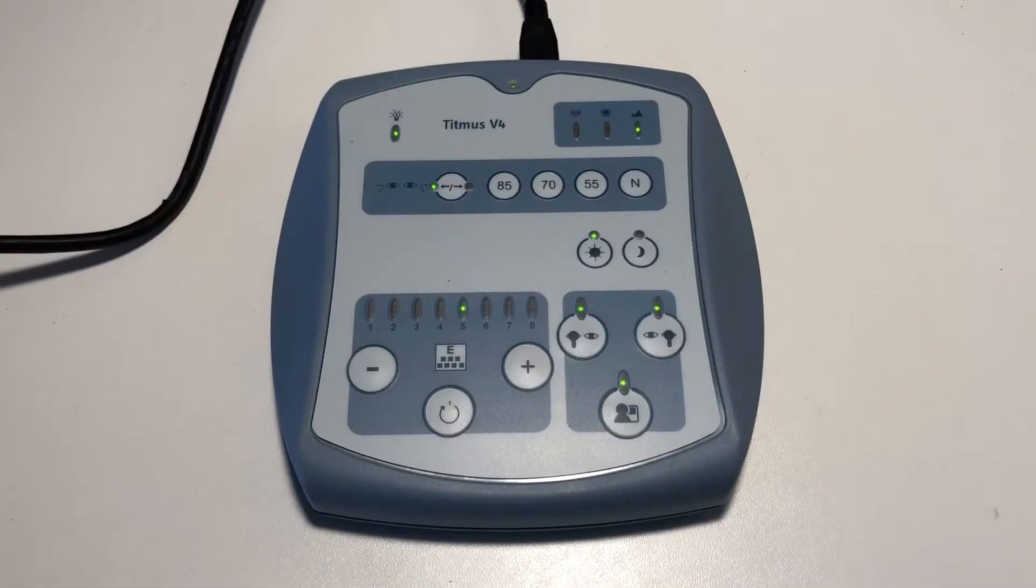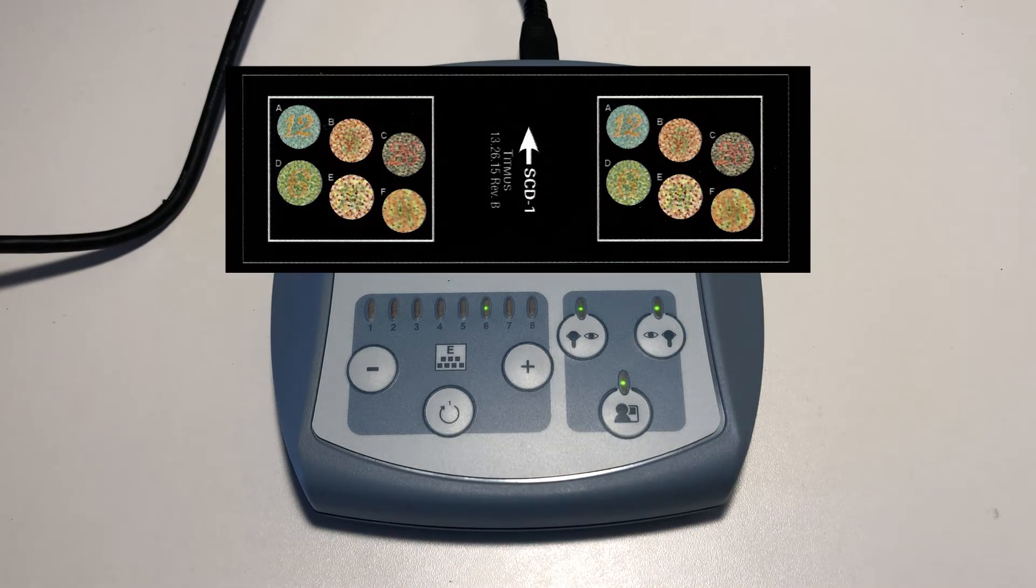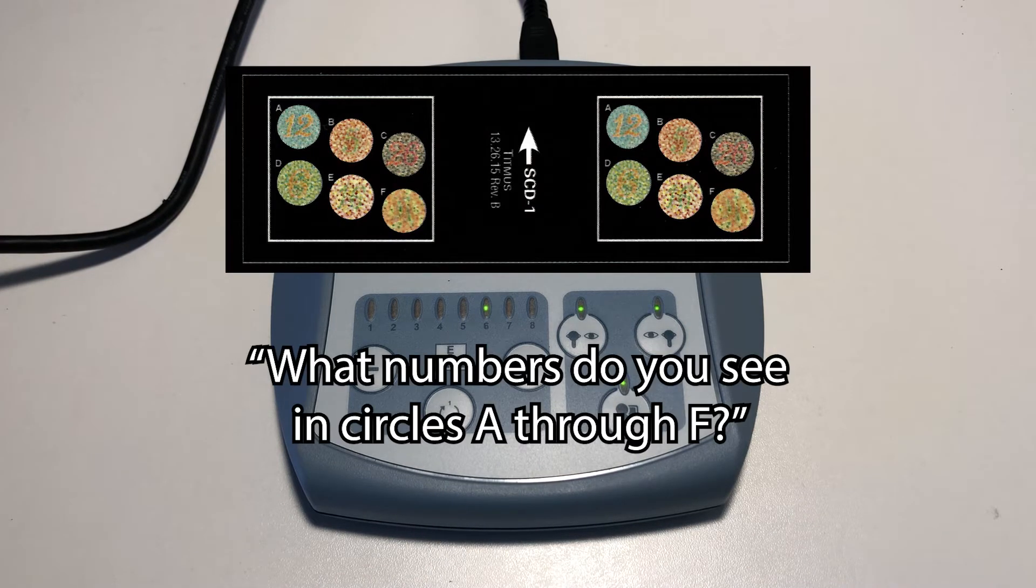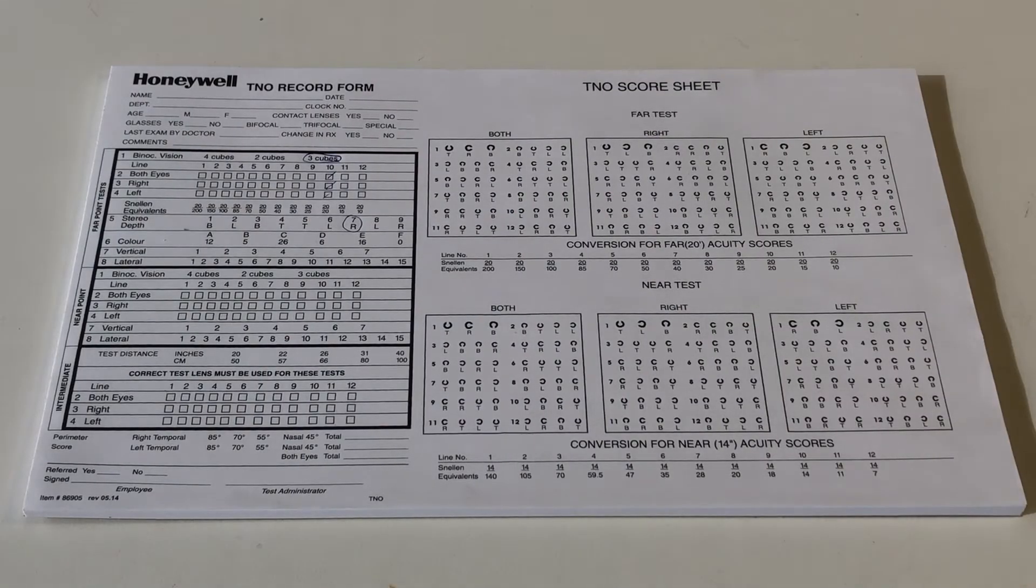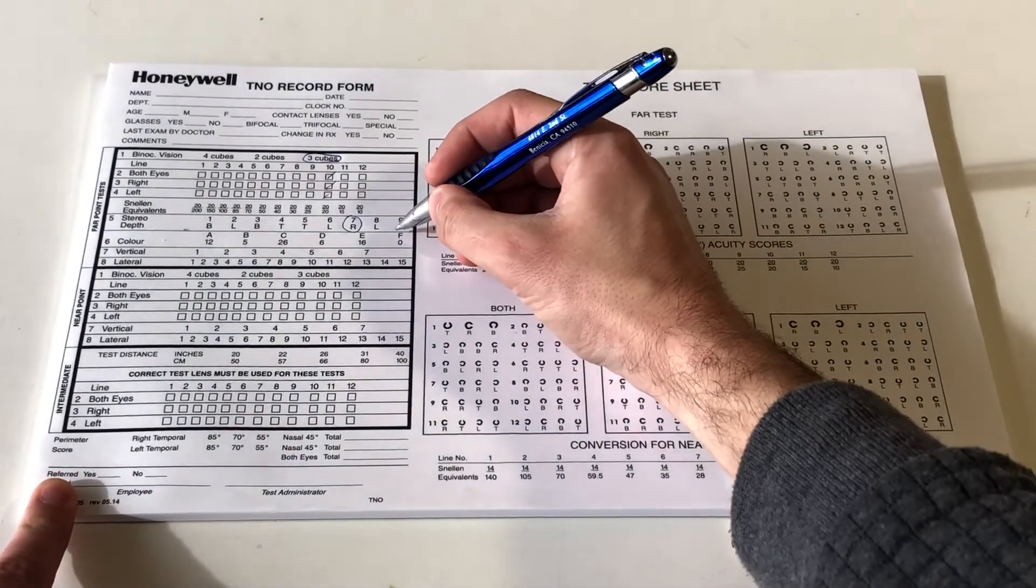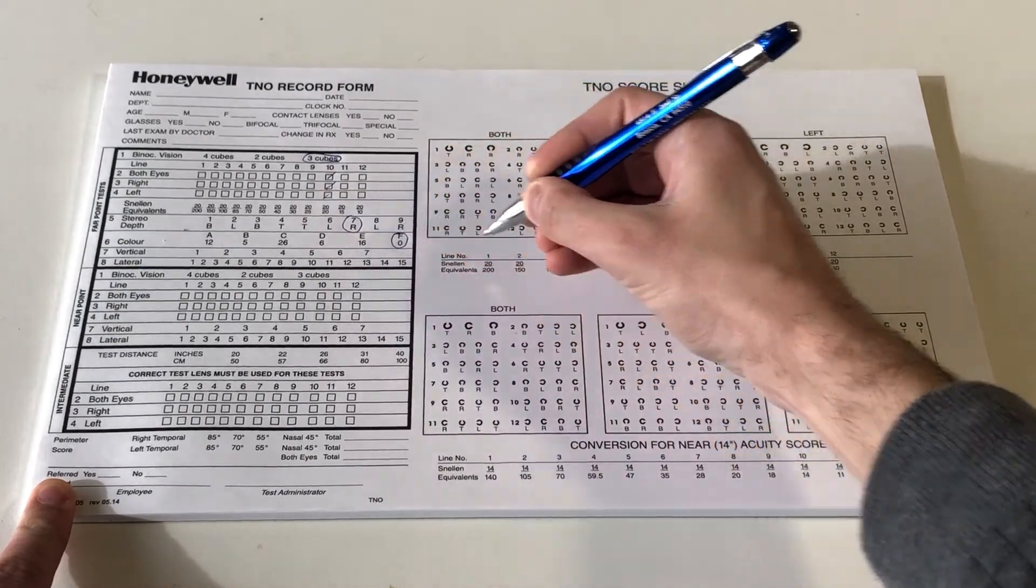Advance to slide number six. This slide tests for red-green color perception. Say to the patient, read me the numbers you see in circles A through F. Circle the last correct answer given on the record form. Note that circle F is unintelligible.